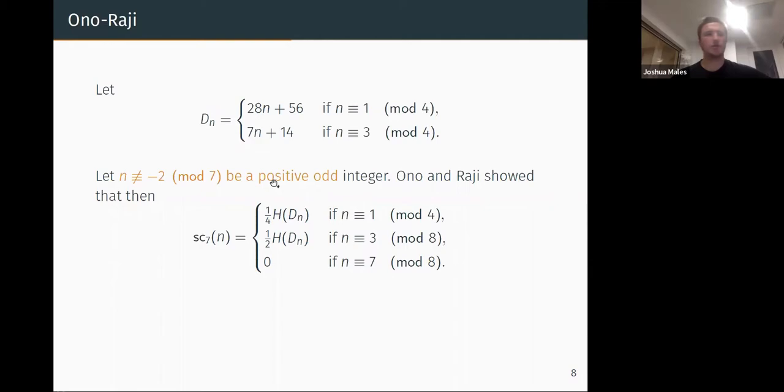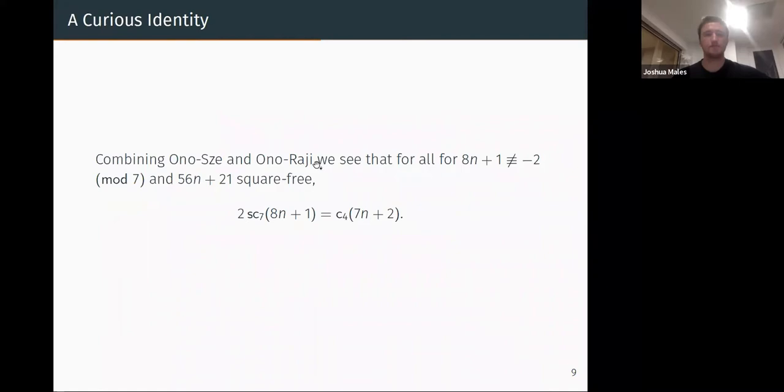But this is a strange restriction. Somehow n is not allowed to be 5 or 7. So that's quite a chunk of n that we don't know anything about. A bigger chunk is that these have to be odd. How did they prove this? They only proved this using the modular generating function type arguments. So it's a bit of a gap left. This is something Ken Ono pointed out to me that if we combine these results of Ono-Sze and Ono-Raji, we find that for 8n plus 1 not congruent to 5 mod 7 and 56n plus 21 square-free, we have some curious identity. On the left hand side, we have two times the number of self-conjugate 7-cores on some arithmetic progression equals the number of 4-cores on a different arithmetic progression. Why should this be true? So this was my major motivation for studying these problems.